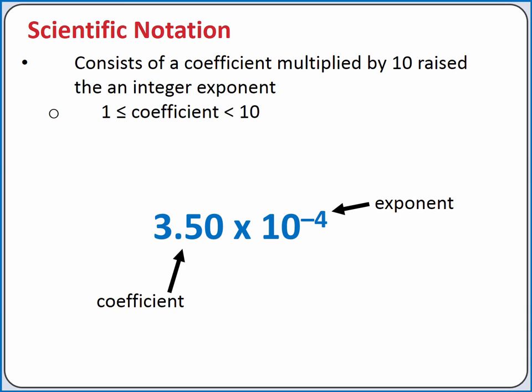With scientific notation, we can report numbers that are very large or very small much more conveniently. And we can easily indicate exactly how many of our digits are significant.